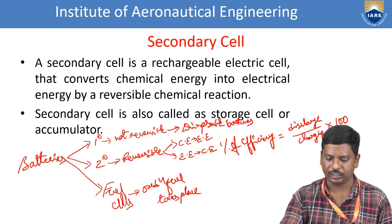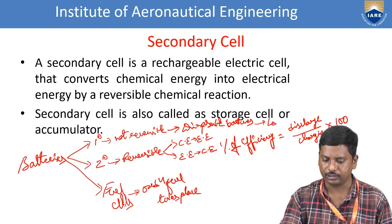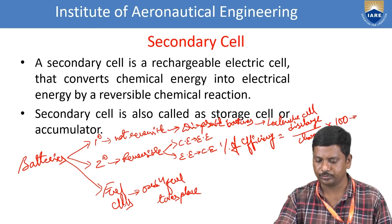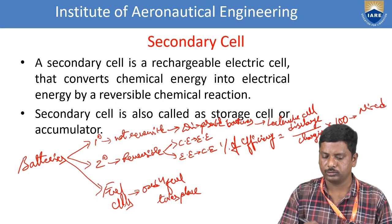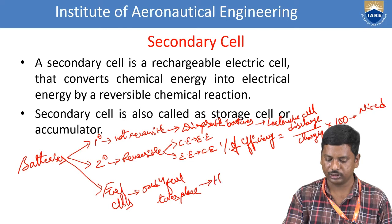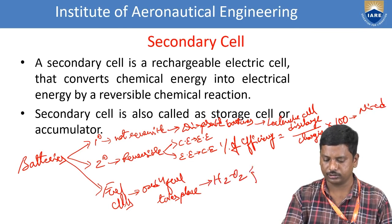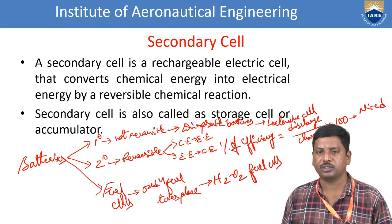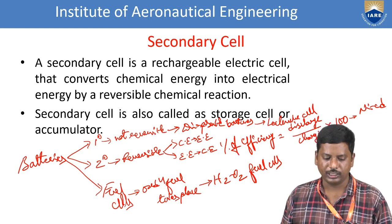The most important example of primary cells is the Leclanché cell. For secondary cells, the example is nickel-cadmium cells. For fuel cells, the example is hydrogen-oxygen fuel cells. This is the basic classification of batteries before learning about secondary cells.